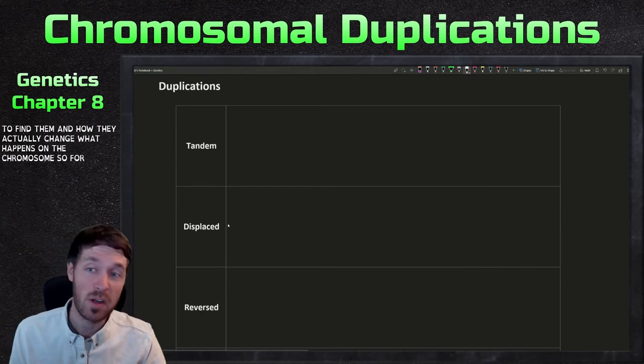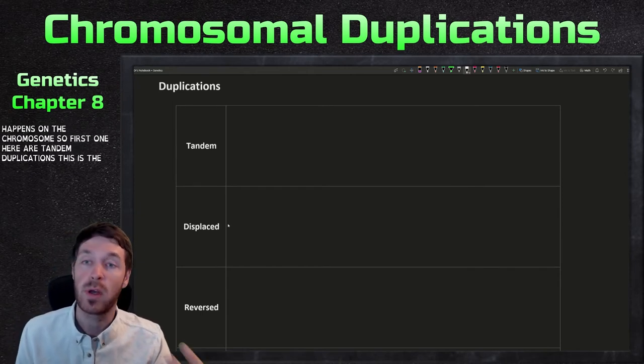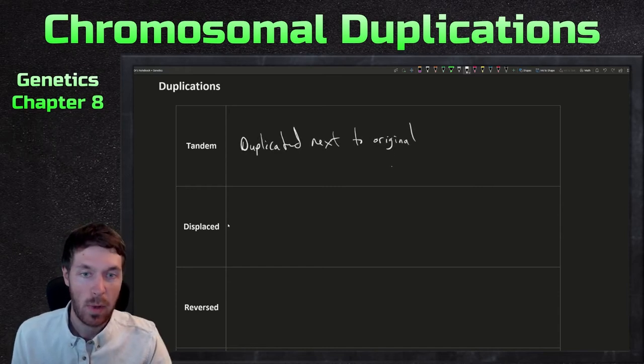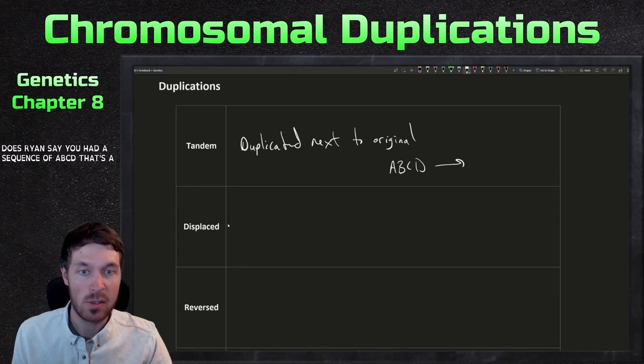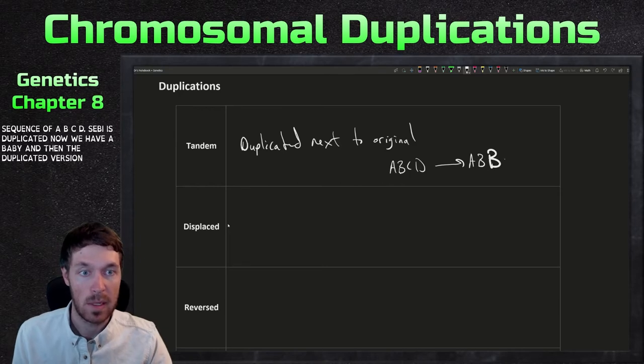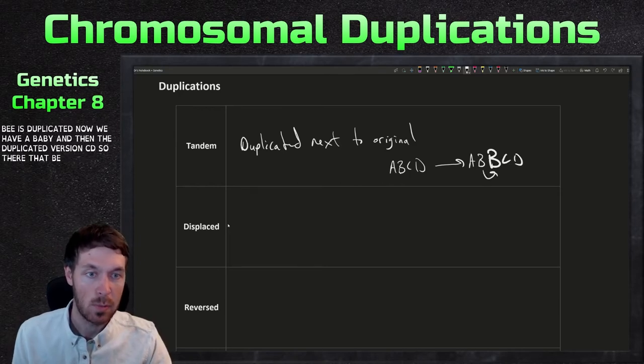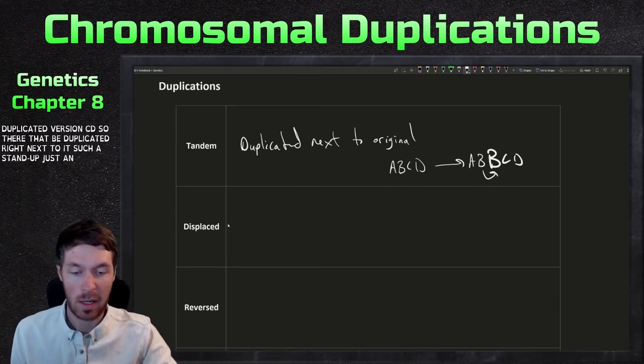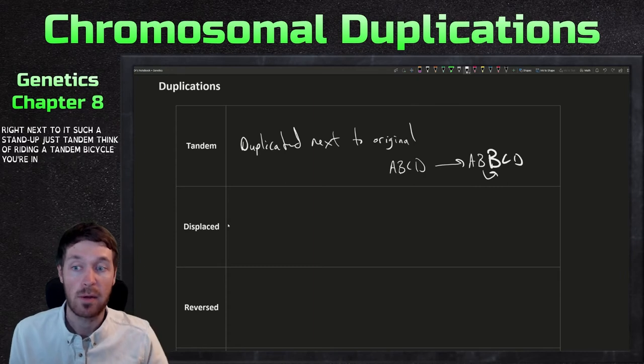So first one here are tandem duplications. This is just when it's duplicated right next to the original. This is when, say, you have a sequence of A, B, C, D. Let's say B is duplicated. Now we have A, B, and then the duplicated version, B, C, D. So there, that B duplicated right next to it. So that's just tandem. Think of riding a tandem bicycle. You're in line right next to each other.